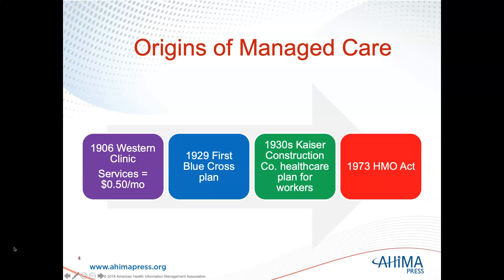In the 1930s, you have the Kaiser Construction Company healthcare plan for its workers, and then in 1973 the HMO Act came into being. That is really the origin of managed care. It is all laid out in your book in Chapter 5 if you want to read about it in more detail.